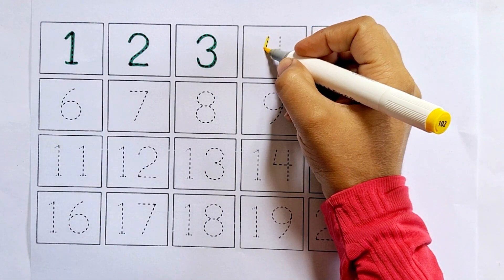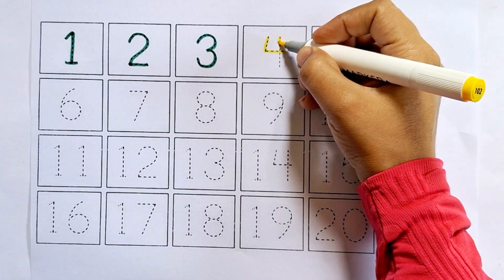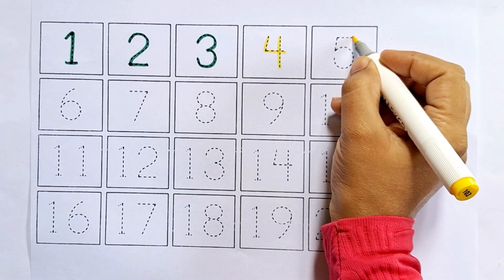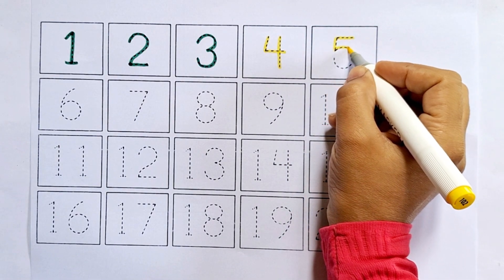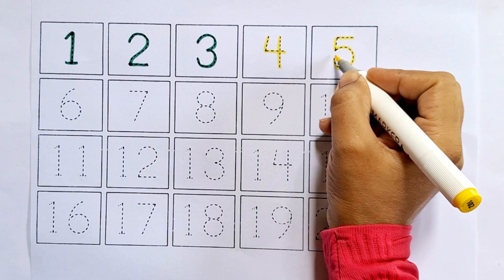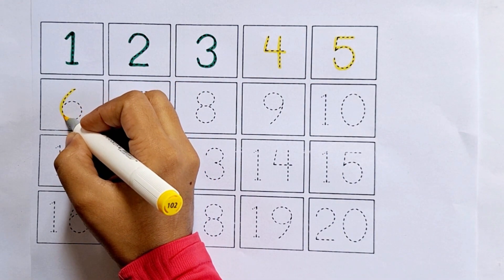Four, this is four. After three comes four. Five, this is five. After four comes five. Six, this is six.